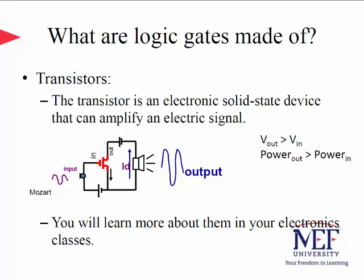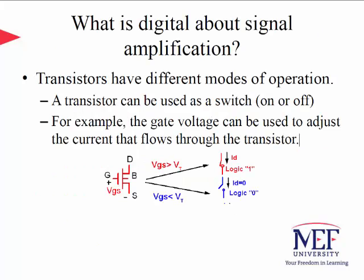You will learn more about transistors in your electronics classes, but let me give you a brief overview. In a nutshell, a transistor is an electronic valve. The voltage or current applied to the input gate controls how much current can flow between the output nodes — much like adjusting the handle on a water valve that varies the flow of water. As for what is digital about signal amplification — nothing, in fact. Amplification is just one mode of operation; transistors have different modes of operation. A transistor can be used as a switch, having modes on and off.